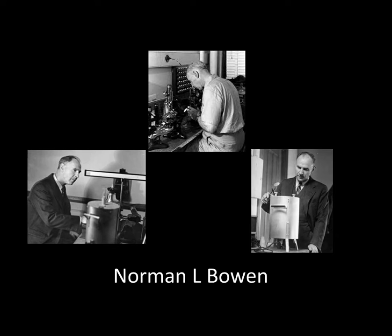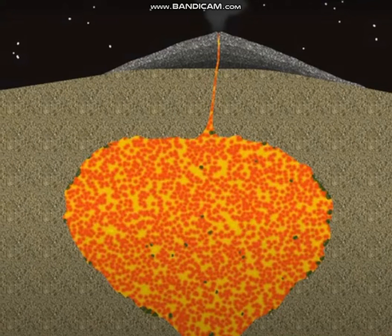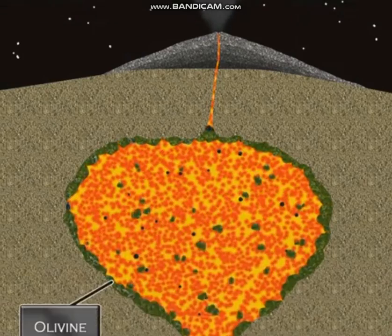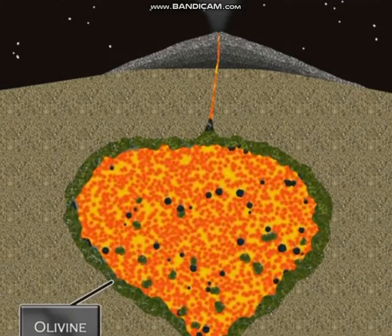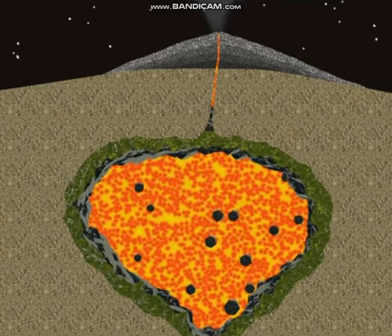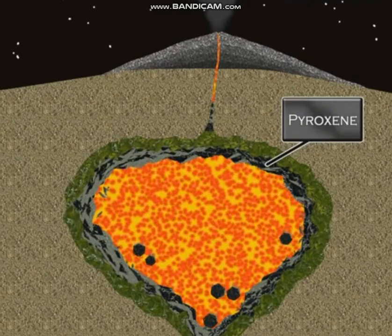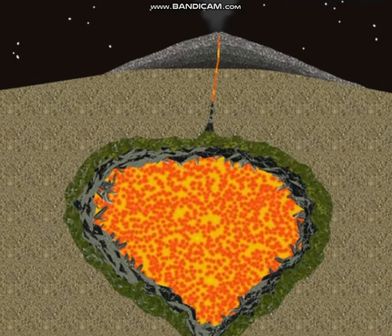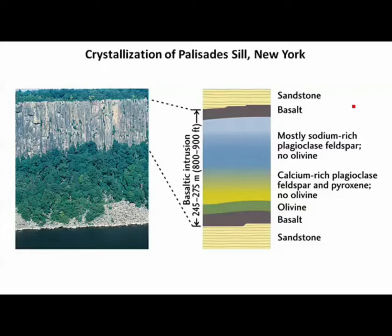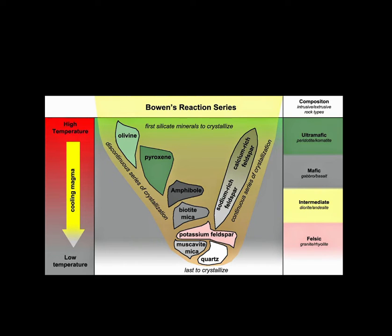Bowen collected samples from that sill and tried to melt those rocks in his laboratory. When the rock sample was completely melted, he tried to reverse the process — he cooled it down. When gradually decreasing the temperature, he found that minerals were crystallizing in a particular sequence. When correlating this sequence with the sequence of rocks found in the Palisade Sill, the two sequences matched completely. This series is what we call Bowen's Reaction Series — a series of minerals formed when magma gradually cools down and reacts with already-formed crystals to form new minerals.